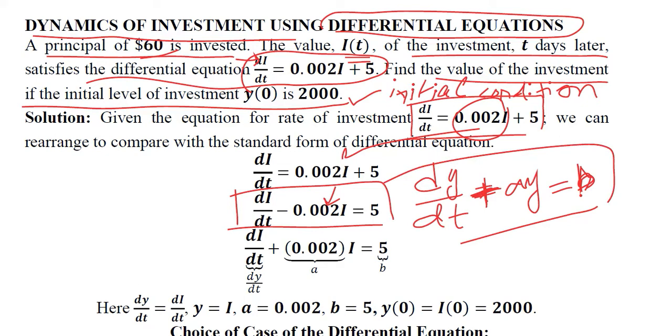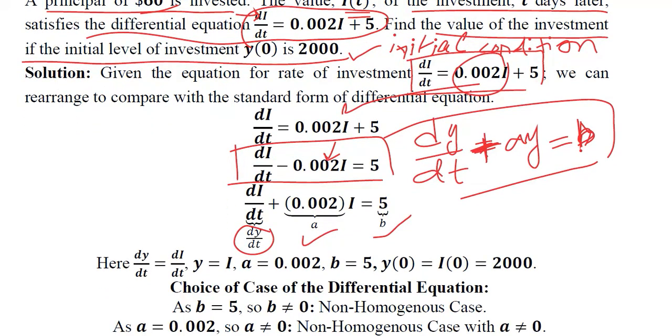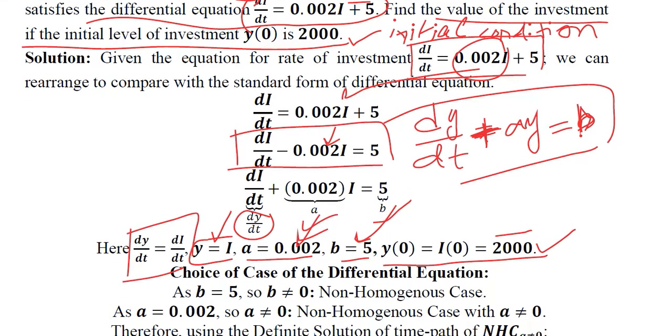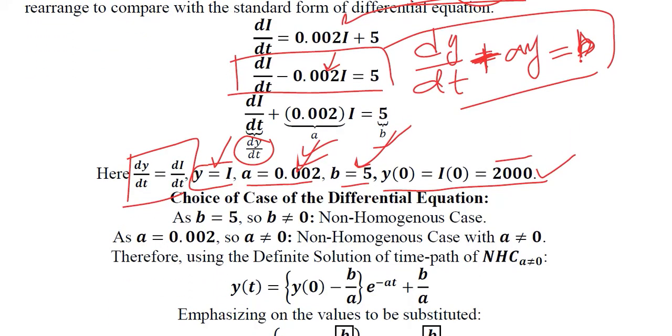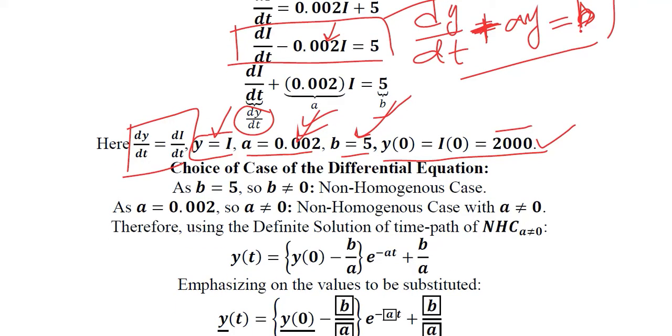The value here extracted is a and then this is b. Instead of y we have I variable which is investment. dy/dt is replaced with dI/dt. We have a numerical value of a that we have extracted. The value of b is extracted. An initial condition is also there and its numerical value is available. So now we are ready for the selection of the differential equation solution.